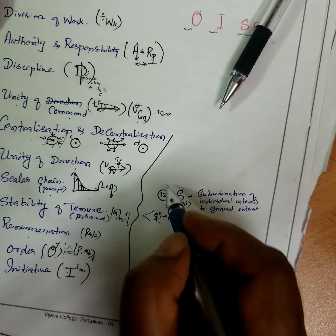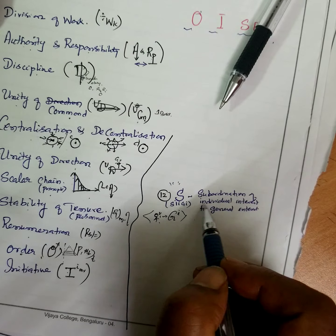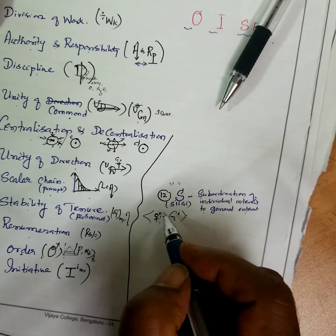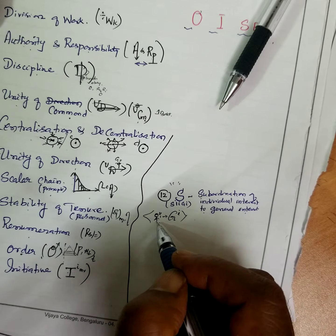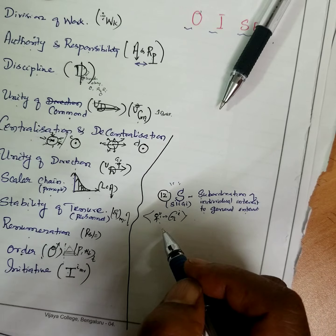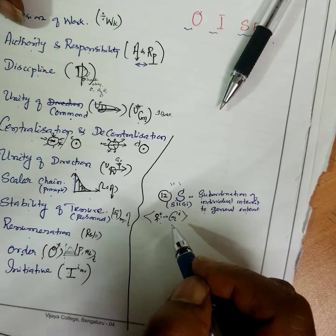This S is more important: subordination of individual interest to general interest. That means individual interest of the worker should not disturb the organization interest. Priority is given to group interest.